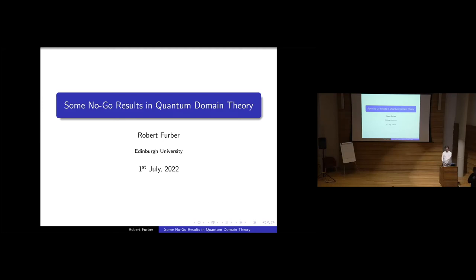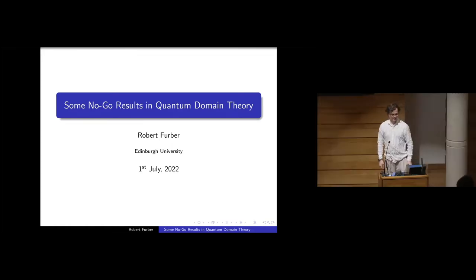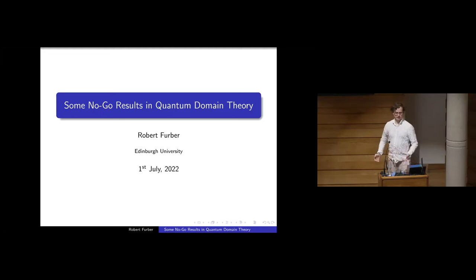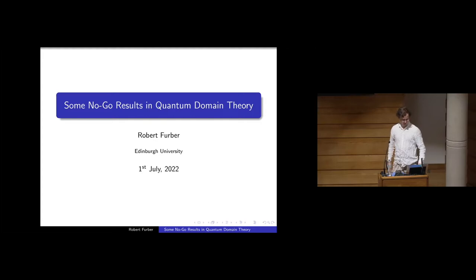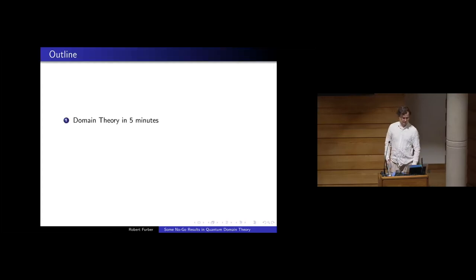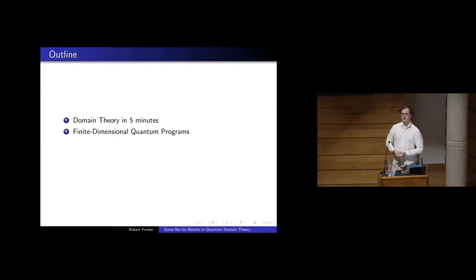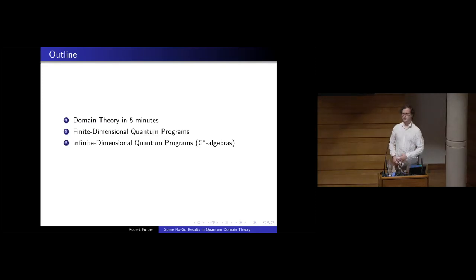This is an algebra, category theory, and process theory session. We'll start with Robert, who will talk about some no-go results in quantum domain theory. The outline covers: domain theory in five minutes, then finite-dimensional quantum programs with a first result, and finally infinite-dimensional quantum programs as interpreted through C*-algebras.